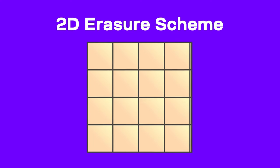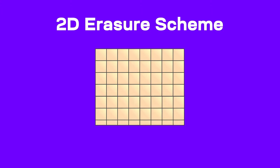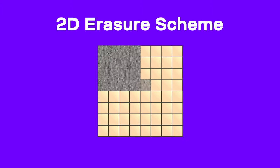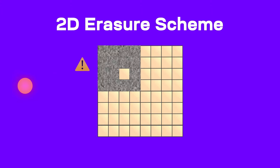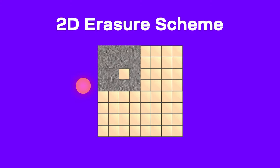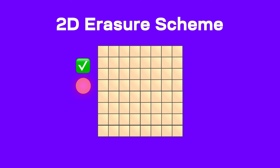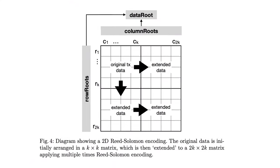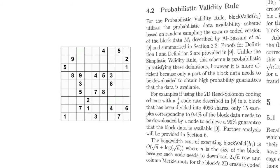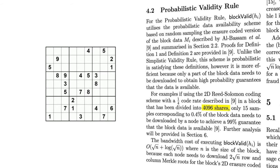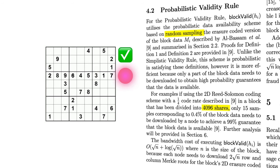First, the data gets erasure encoded vertically into rows, and then horizontally into columns. An attacker must withhold over a quarter of a block to make it unrecoverable. If there's a partial data withholding, light clients can detect this and start block reconstruction with just one honest full node — first recovering a column, then using that data to recover the rest of the rows. Now this block is fully reconstructed and available using this 2D erasure encoding scheme. A cool way to think about this is if blockchain data were put into a large Sudoku puzzle — it could be divided into 4,096 squares, and it's easy to randomly sample squares from each quadrant. And if you discover a small gap, light clients can just re-encode it and solve a small row of the puzzle.